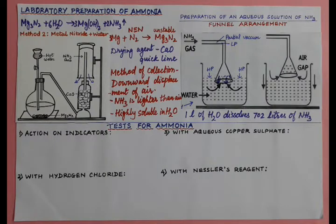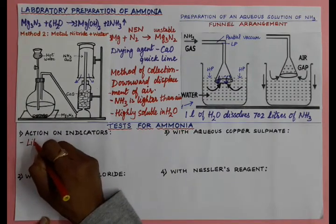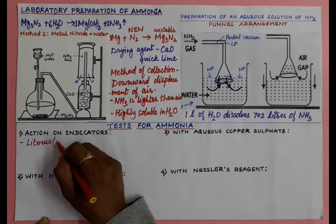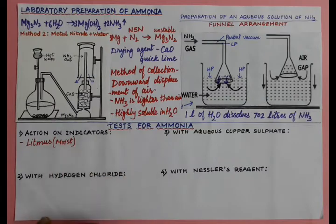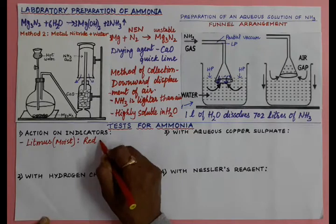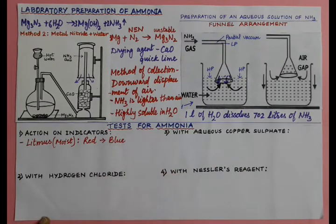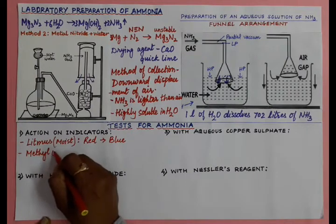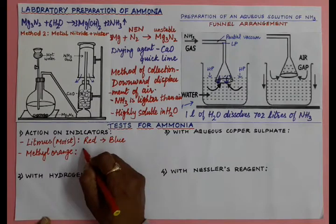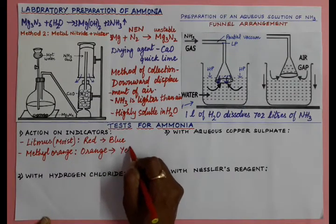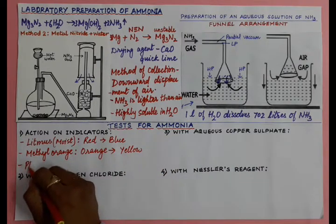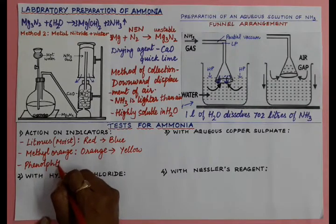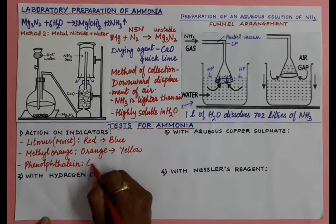Now let us understand the tests for ammonia gas — action on indicators. If moist red litmus paper is brought near ammonia, it turns blue because ammonia is basic in nature. Methyl orange turns from orange to yellow. Phenolphthalein turns from colorless to pink.